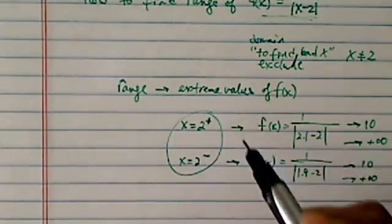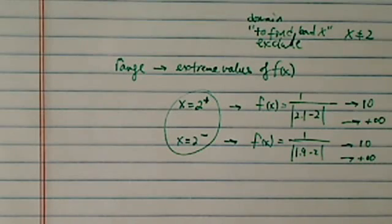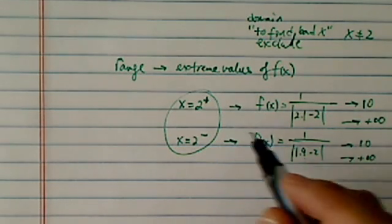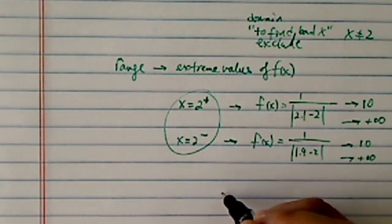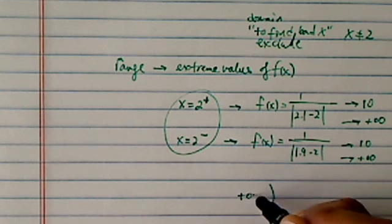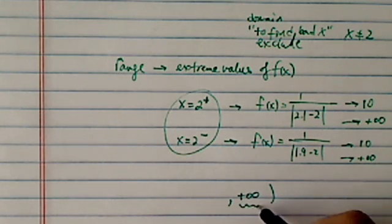So right around where x is undefined, you can see you're going to get to positive infinity, no matter what side you start from. So part of the range has to be positive infinity; that's the extreme.